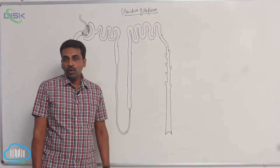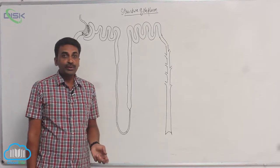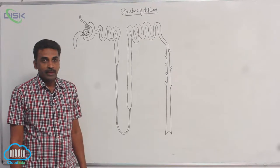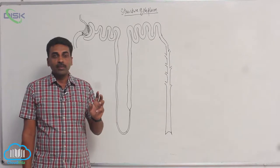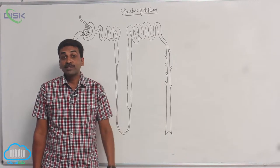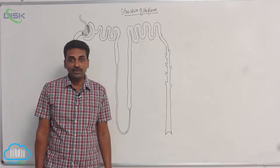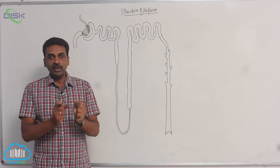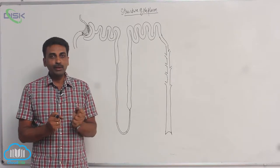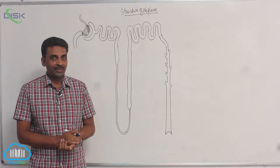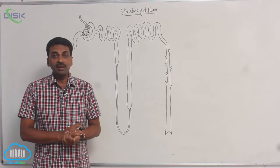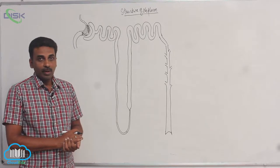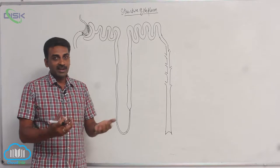In kidneys there are structural and functional units called nephrons, also called uriniferous tubules. They are minute tubules which actually filter blood to produce urine. There are a million nephrons in each kidney — a million is ten lakhs.